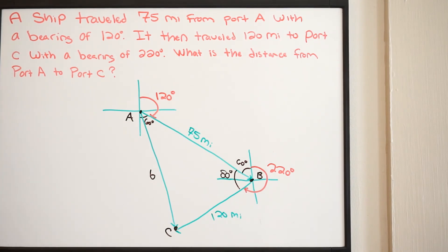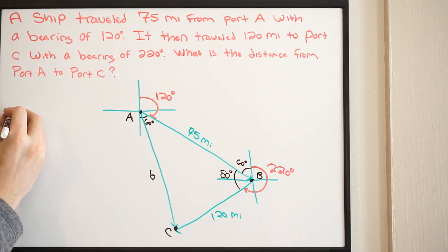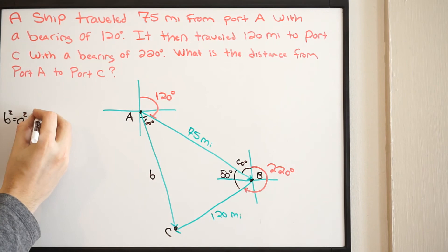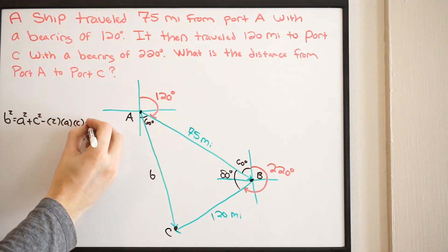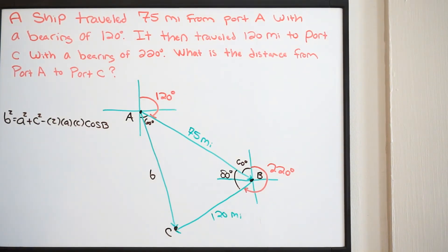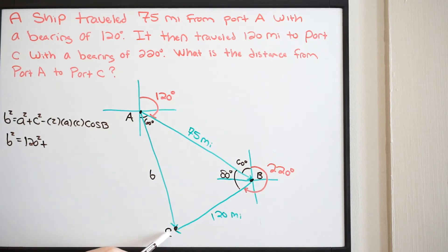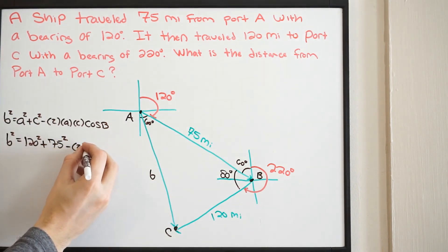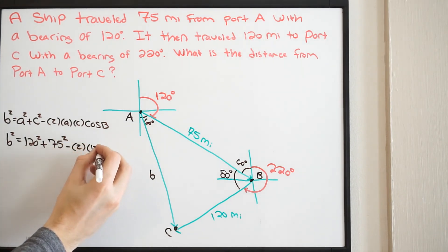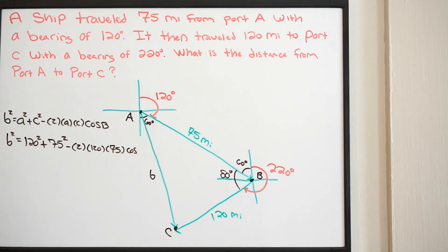Using the law of cosines: B² = A² + C² − 2·A·C·cos(B). Filling in our values: side A opposite angle A is 120, side C opposite angle C is 75, and angle B is 80 degrees. So we get B² = 120² + 75² − 2(120)(75)·cos(80°).